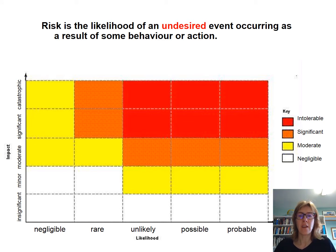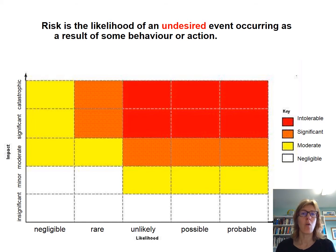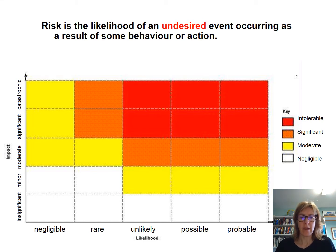This is a risk matrix — once you've seen it, you'll probably see it all over the place. It's the way we think about the interaction between possible impacts, which might be catastrophic as in the example we just discussed, or might be fairly insignificant, and the way they interact with likelihood. We're trying to stay out of the red and orange and get things into a moderate or negligible possible risk.